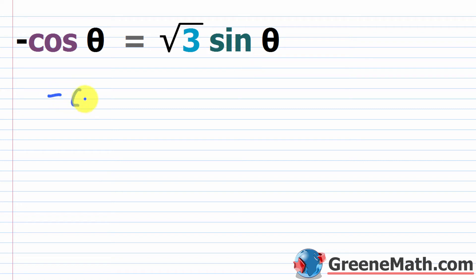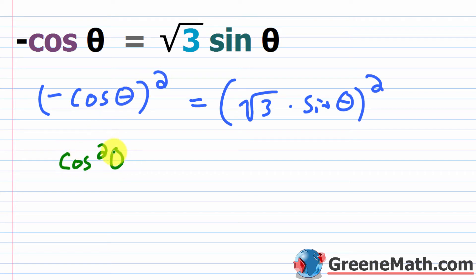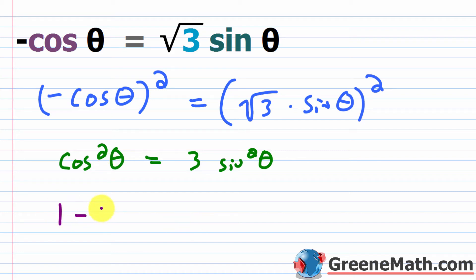Squaring both sides: (negative cosine theta) squared equals (square root of 3 times sine theta) squared. The negative squared becomes positive, giving cosine squared theta on the left. On the right, square root of 3 squared is 3, and sine theta squared is sine squared theta. Since cosine squared theta equals 1 minus sine squared theta, we substitute to get 1 minus sine squared theta equals 3 sine squared theta.